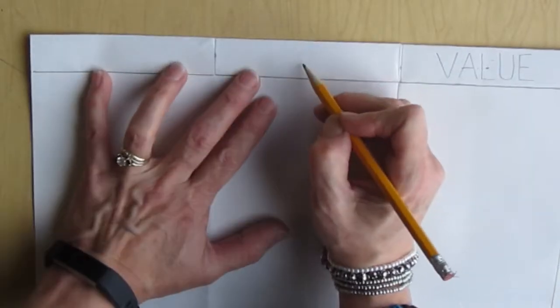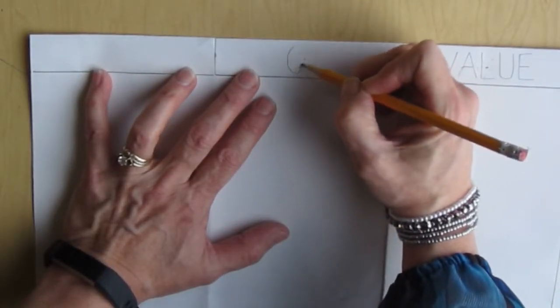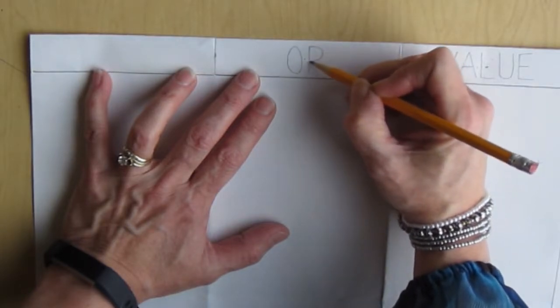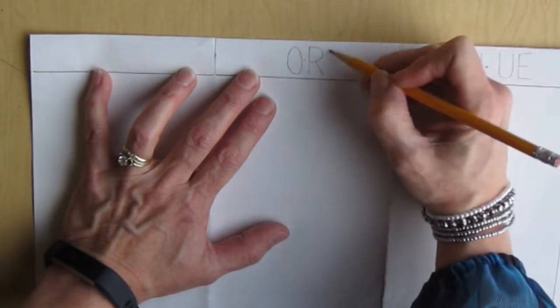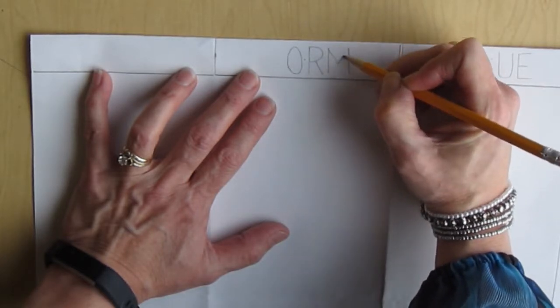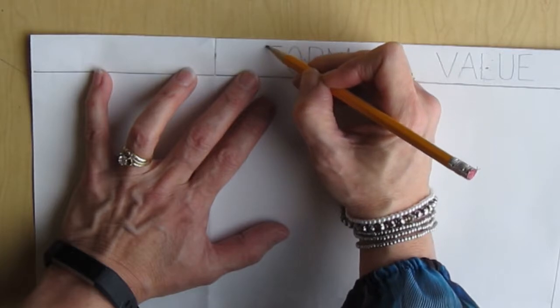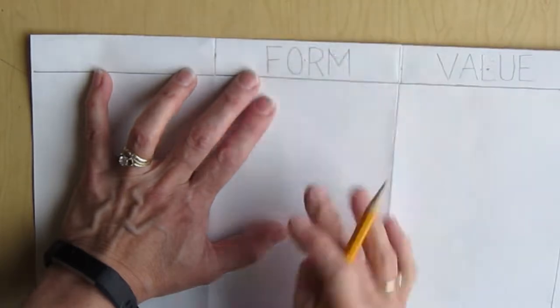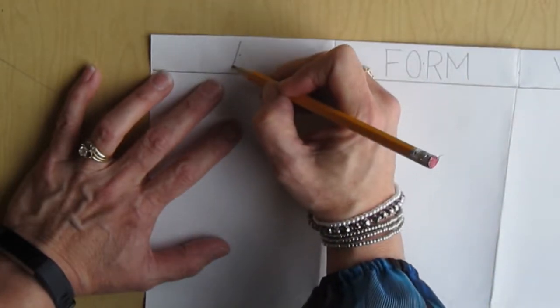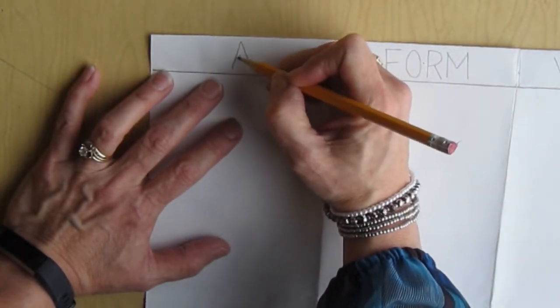Then to the left of that will be the element FORM. And then the very left side will be the element SPACE, starting with the A in the center.